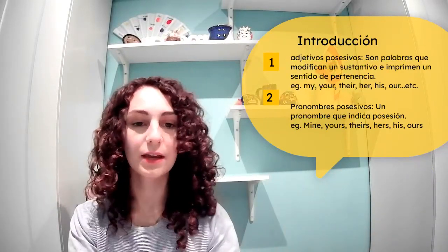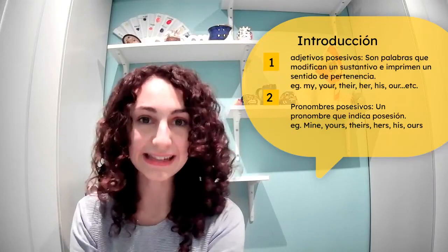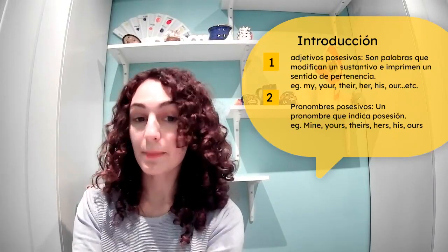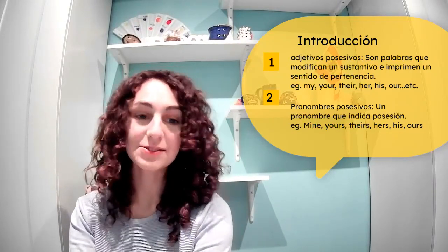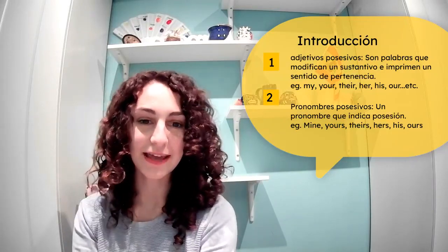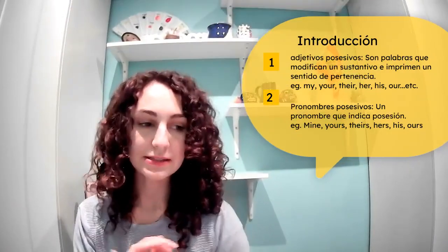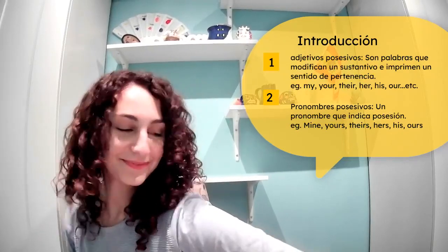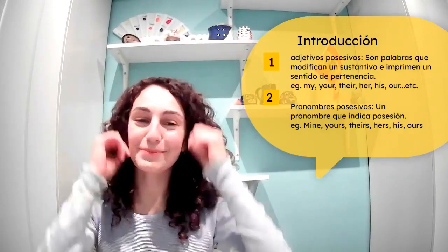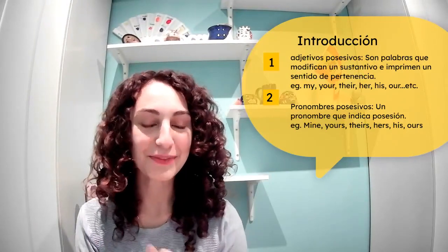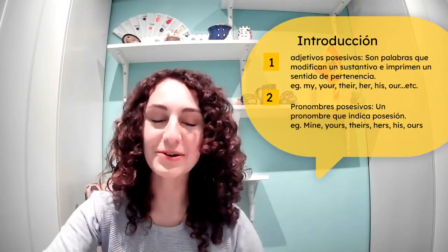Bueno, empezamos. Los adjetivos y pronombres — los adjetivos son palabras que modifican un sustantivo e imprimen un sentido de pertenencia. Por ejemplo, en inglés son my, your, their, her, his, or our. Son palabras que describen un sustantivo — they are words that describe a noun — y hay ese sentido de pertenencia.